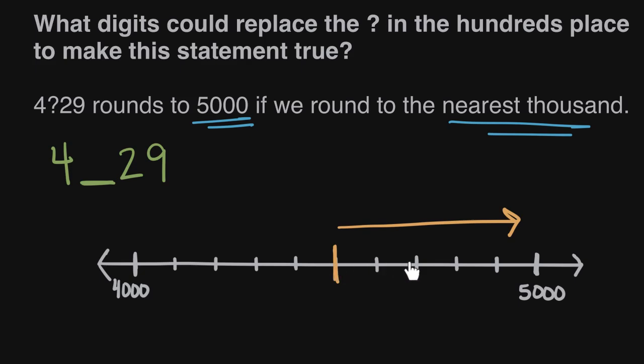From the halfway point up, we'll round up to 5,000. So what points, knowing that this right here is 4,500, what numbers or what digits could we fill in here to get a number that's greater than 4,500? Because anything less than that's going to round down, be closer to 4,000.